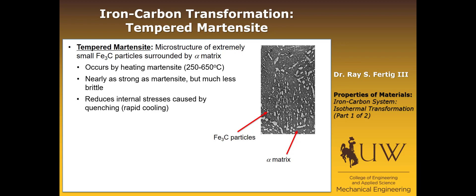Those are the primary microstructures you should be aware of with respect to the isothermal transformation of the iron-carbon system. In part two, we'll talk more specifically about how to use TTT diagrams to determine relative compositions of microstructures due to different cooling histories.